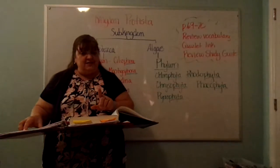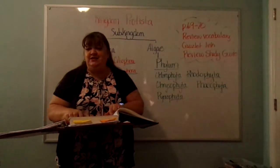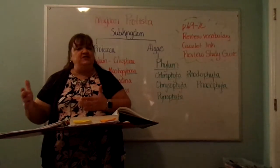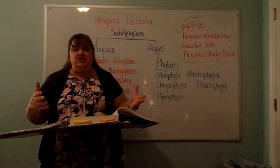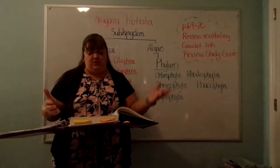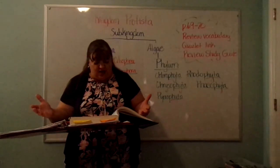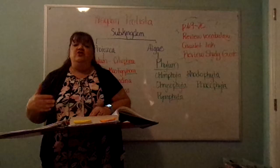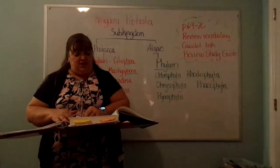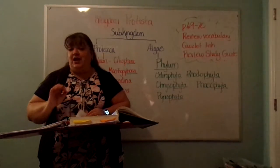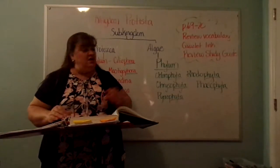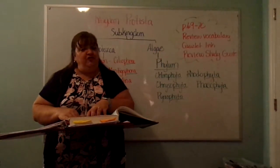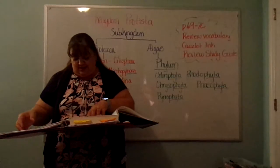On your test, you will have to identify pictures. There will be a picture of an amoeba — you have to differentiate which one's an amoeba, which one's a euglena, which one's a diatom, which one is a volvox. You need to know the differences between these things and be able to identify them in pictures. So pages 69 and 70 will be a valuable tool for you to use to prep for the test.